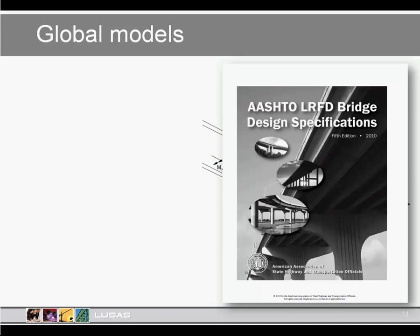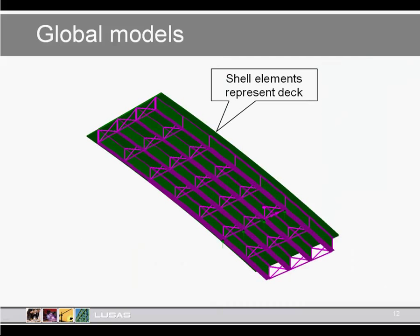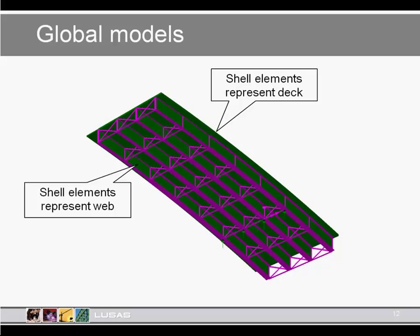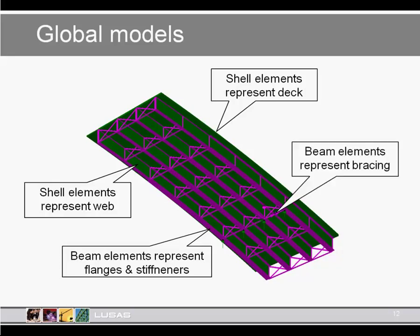The United States Bridge Design Specifications states that frequently the torsional warping degree of freedom is not available in beam elements, so the finite element method may be more appropriate, and a variety of elements should be used in this type of model. Here is an example of one such model, where shell elements represent the deck structure and webs, while beam elements represent the flange stiffness. The bracing elements are also represented with beam elements, adopting the AASHTO recommendation previously mentioned.